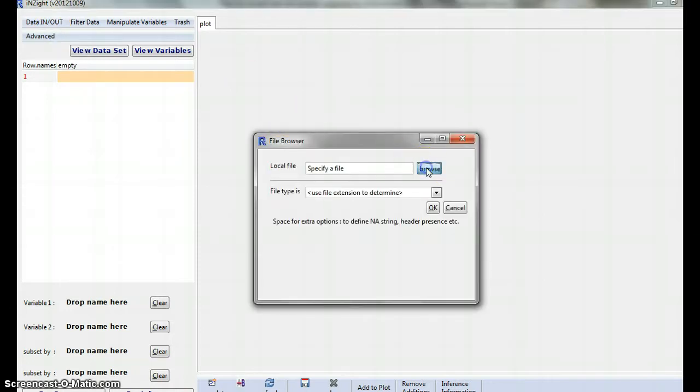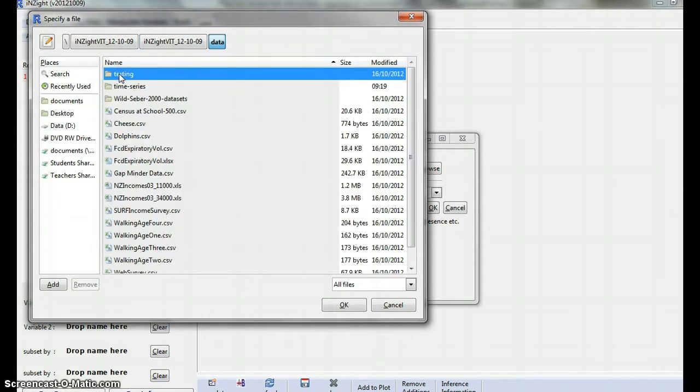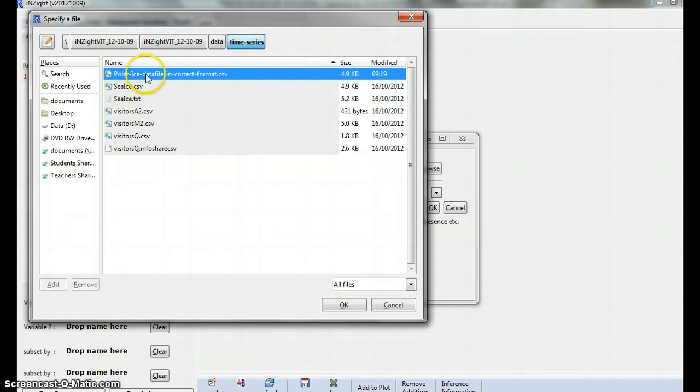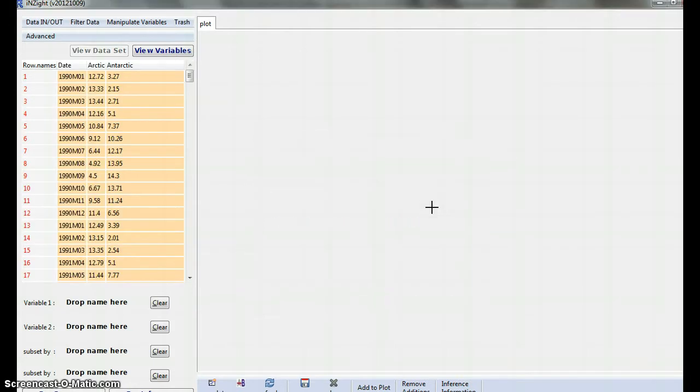I'm going to browse, and in this Data folder, inside the Insight folder, I've actually put inside Time Series folder, I've put polar ice data file in csv, comma separated values format. I double-clicked, I could have just gone OK, and I'm just going to go OK there.